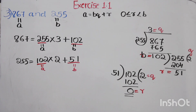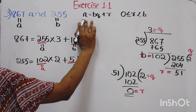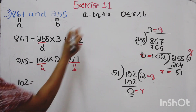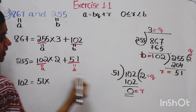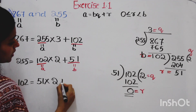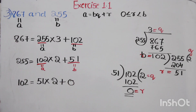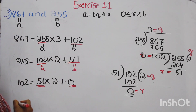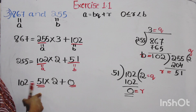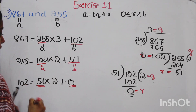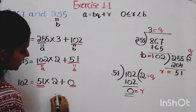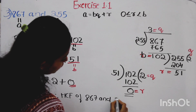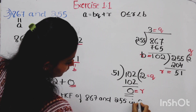Writing in the form A equals BQ plus R: A is 102, B is 51, Q is 2, and R is 0. Since the remainder is 0, in this stage the value of B — the divisor — is 51. Therefore, HCF of 867 and 255 is 51. This is the solution.